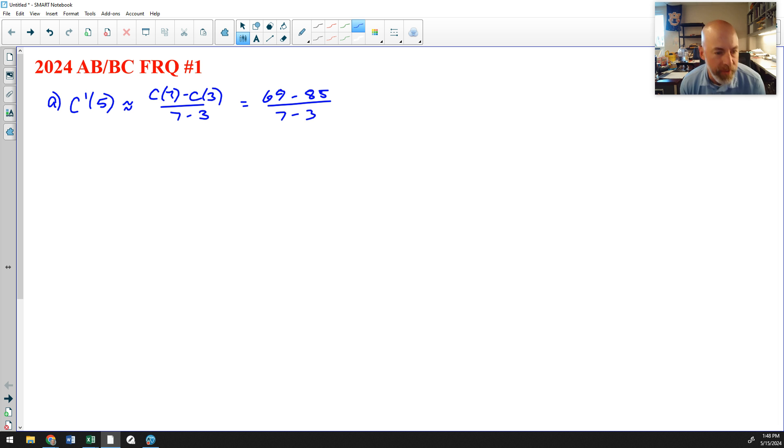Which would be C of 7 is 69. Nice. C of 3 is 85 over 7 minus 3. And you can stop right there. It says show the work that leads to your answer and include units of measure. So in the numerator, we subtracted degrees in Celsius, and in the denominator, we subtracted minutes. So our unit would be degrees Celsius per minute. And I believe that's 69 minus 85, negative 16 over 4, which is negative 4. Make sure you do show a difference quotient in your setup for that one.